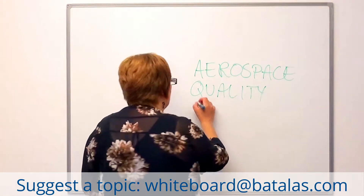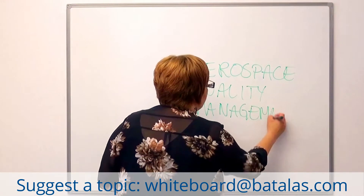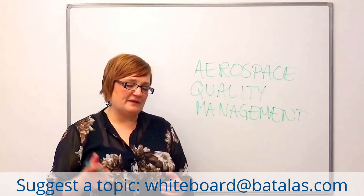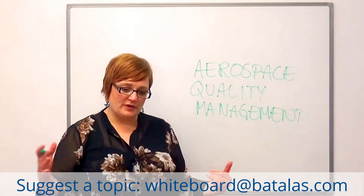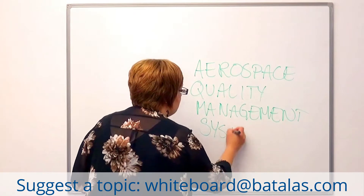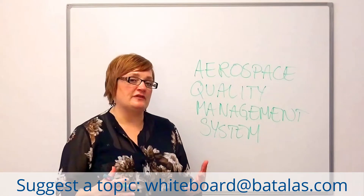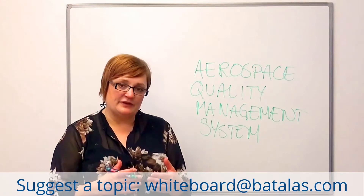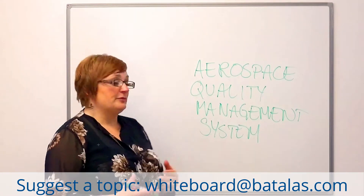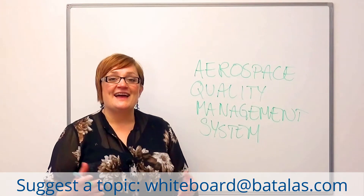So how do we manage quality? Well, management is all about leadership, it's about having a clear direction, it's knowing where you're going and how you're going to get there. And when all this is put into a system, it means that we identify the key processes of our organisation, we know how they interact with each other to achieve our objectives. So an aerospace quality management system is all about people and processes working together to achieve a common goal, and that is AS9100.